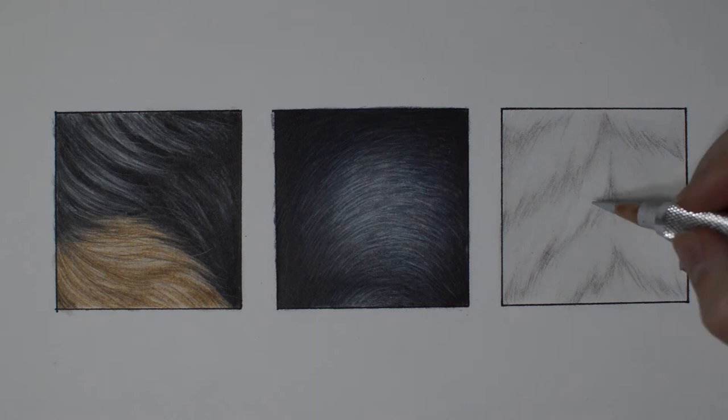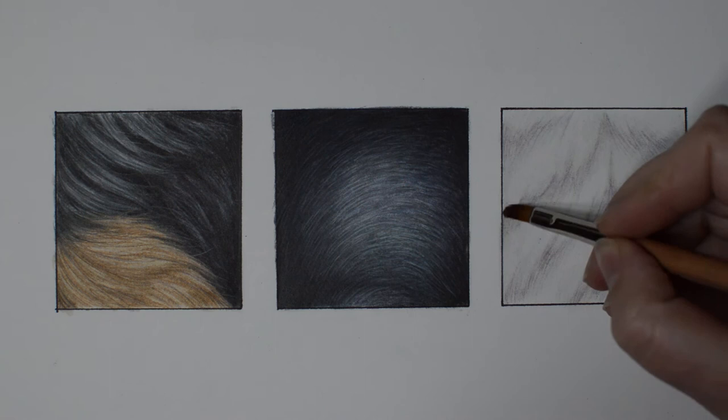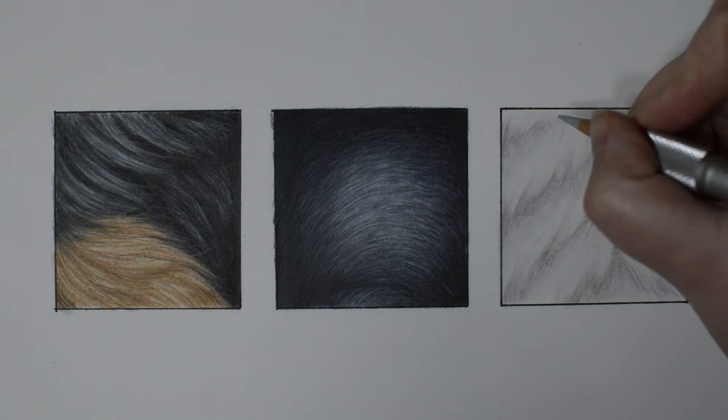The key point when you're drawing white fur is to take your time and do it slowly because you only have one shot. You can't really rework it because if you have covered the white of the paper showing through you're not really going to have it turned back to white.